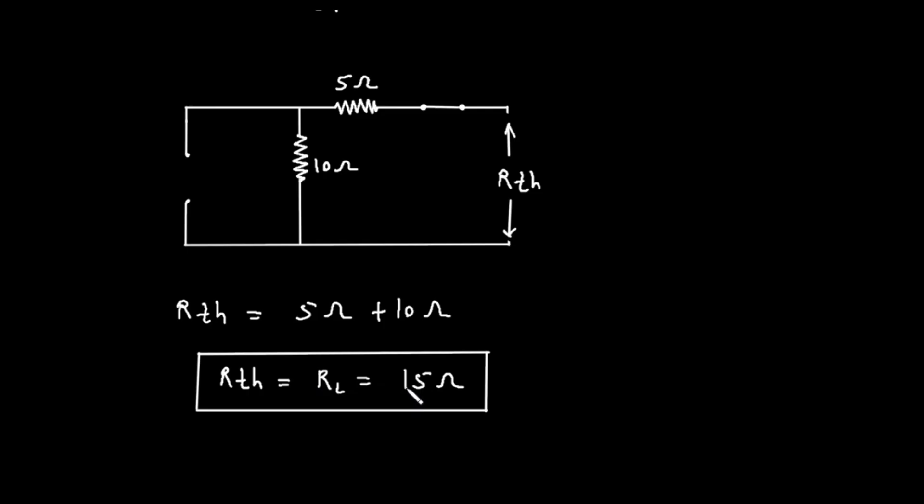Therefore, the final answer is that the value of the load resistor R sub L should be 15 ohms to ensure it receives the maximum possible power from the circuit.